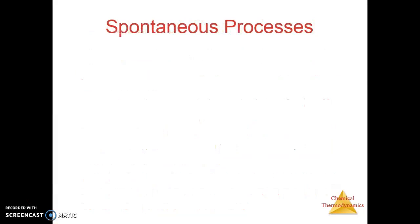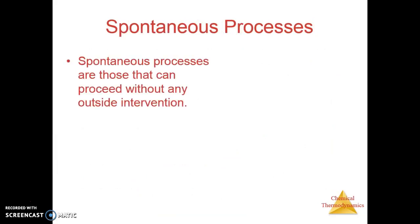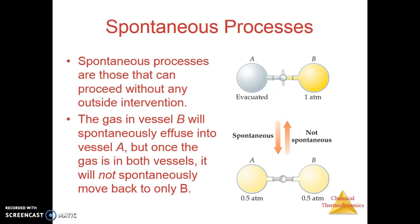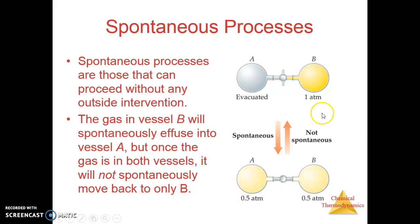So how do we deal with spontaneous processes? A spontaneous process is one that can occur without any outside input — it doesn't need help, it doesn't need energy, it doesn't need anything in order to occur. For example, if we have gas on the B side of an apparatus and we open the valve with nothing in the A side, the gas in B will spontaneously move and fill some of A, so that there are equal pressures of gas in both sides of the container.